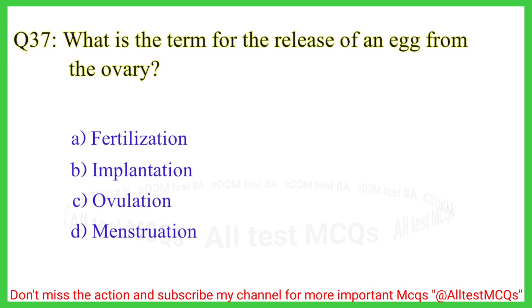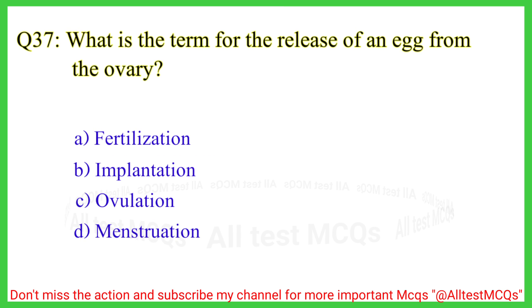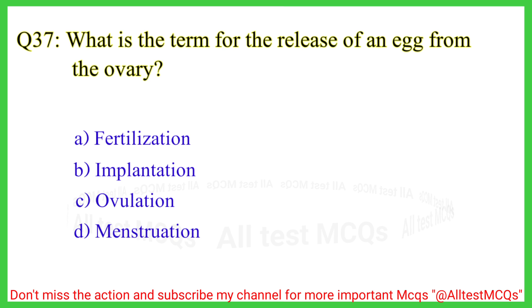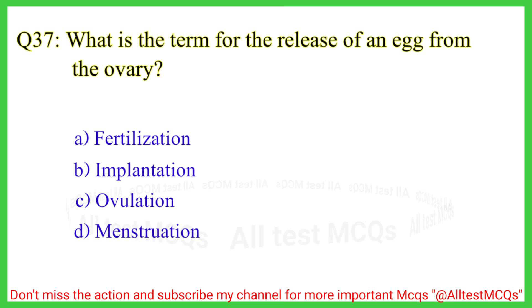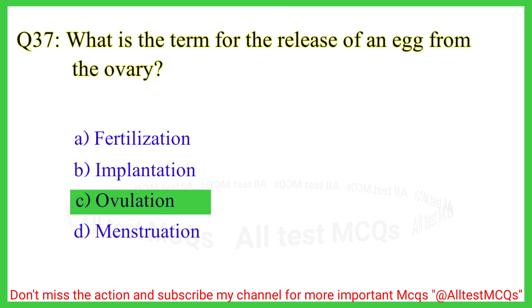Question number 37. What is the term for the release of an egg from the ovary? The correct answer is option C, ovulation.